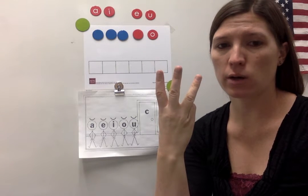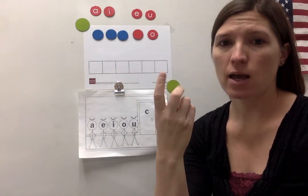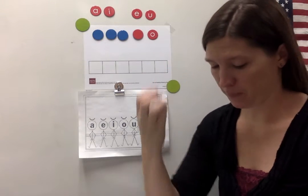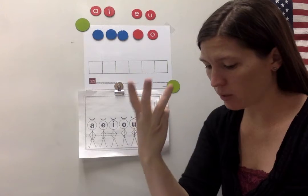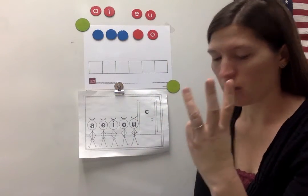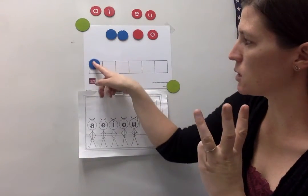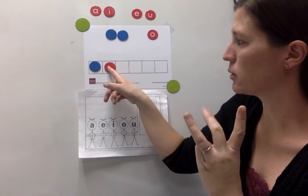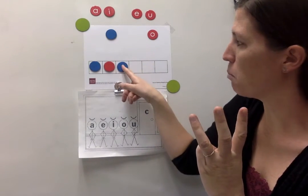We stretched it out on our fingers one more time. Sob. S, AH, B. Three sounds. Watch me pull down the sound chips. A blue chip for S, a red chip for AH, a blue chip for B.